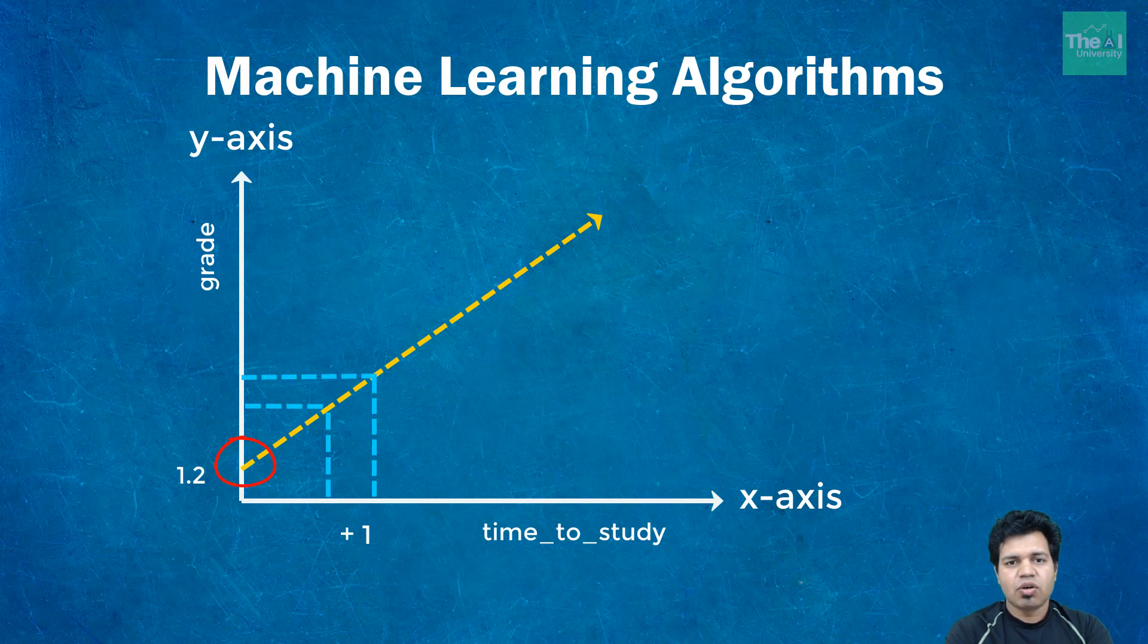So with an hour of increment in time to study will result in increase in some grades. So if the coefficient or slope a1 is less then it means that grade increment will be less for a unit increment of hour with respect to time to study. If the slope is higher then that means that increment in time to study will result in more increment in grades.